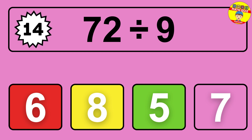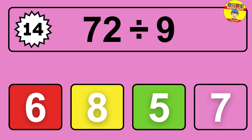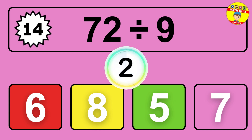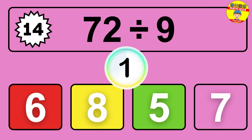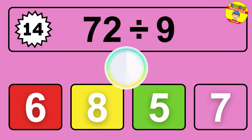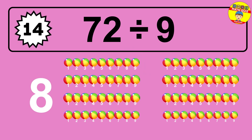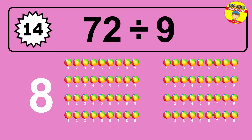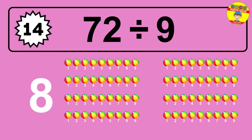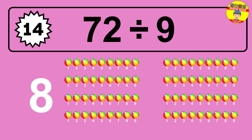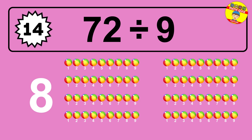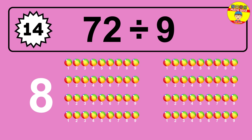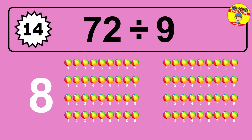What is 72 divided by 9? Picture this: you have 72 objects to divide into groups of 9. How many groups can you make? Let's think about it. Ready to find out? Let's break it down. Imagine you have 72 objects. Now think about splitting them equally into smaller groups of 9.